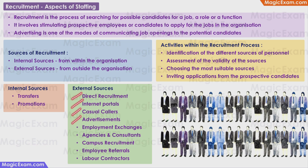Other external sources include employment exchanges — in some states, certain jobs must be registered with government employment exchanges, which send in registered candidates, typically for entry-level jobs. You can use agencies or consultants like recruitment agencies or placement consultants, also called headhunters. Campus recruitment is typically a good source for bulk or mass hiring for junior-level roles. Employee referrals, where employees refer ex-colleagues or friends, are another option. And labor contractors can provide short-term or long-term contract workers.